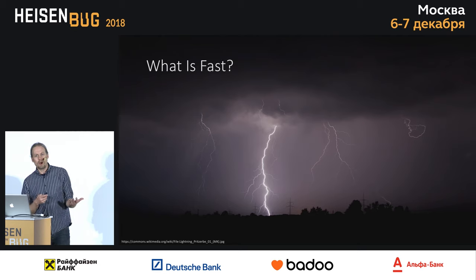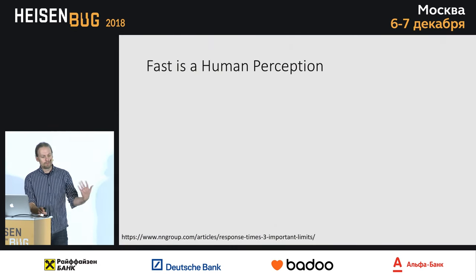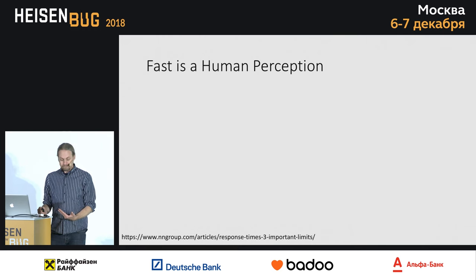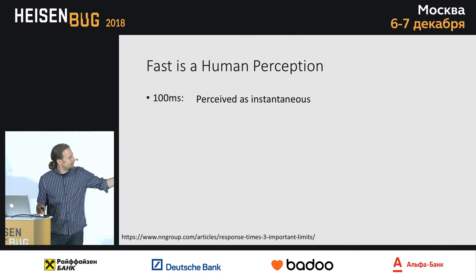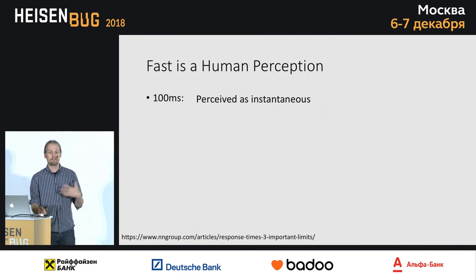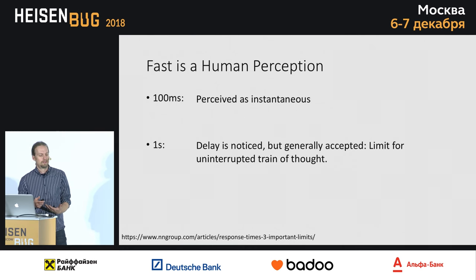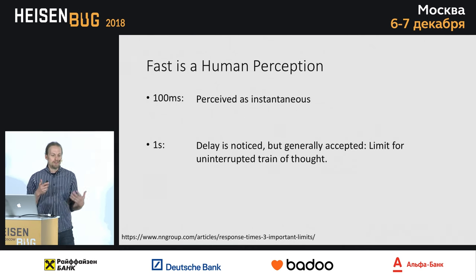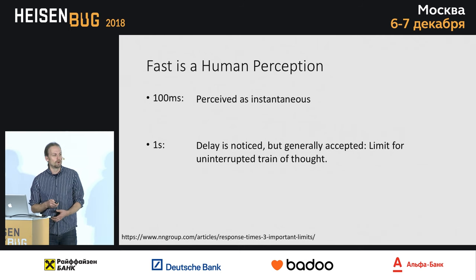Fast is really a human perception, and there's some research done on this. 100 milliseconds is perceived as instantaneous — you can feel that transition and it feels really fast. But what about one second? You kind of notice the delay, but we kind of deal with it. We all understand that one second is normal.